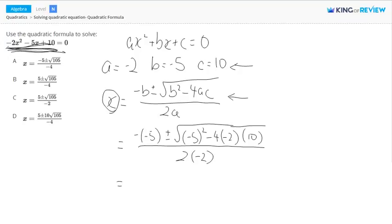So if you calculate this, negative negative 5, that's going to be just 5 plus or minus square root of negative 5 squared, which is 25, negative 4 times negative 2, which is 8, times 10, which is 80,